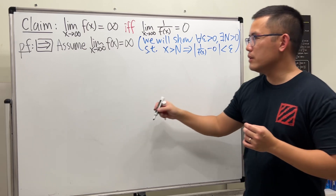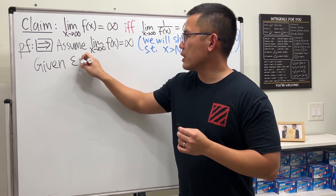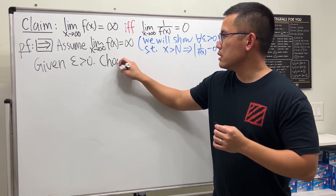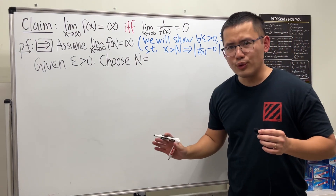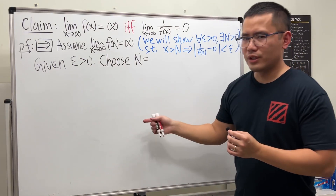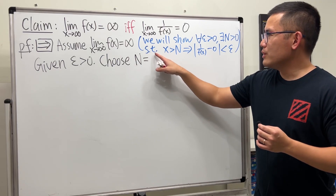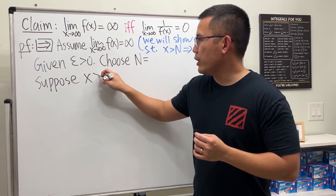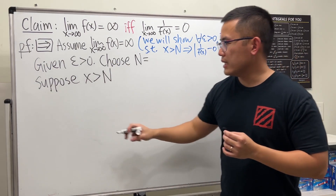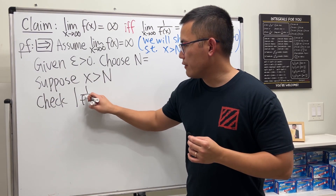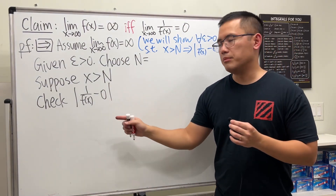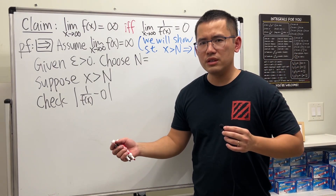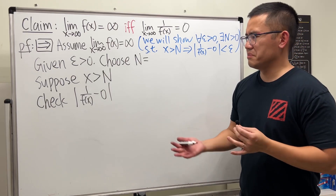Given epsilon greater than zero, we'll choose a capital N to be something — we don't know yet, so leave it for now and come back to fill it in later. Suppose x is greater than N. We want to show that the absolute value of 1 over f(x) minus zero is less than epsilon. But we're a bit stuck because we don't have an actual formula for f(x) — it could be the square root of 3x plus 2, or natural log of x. So what do we do?